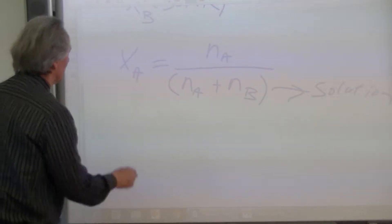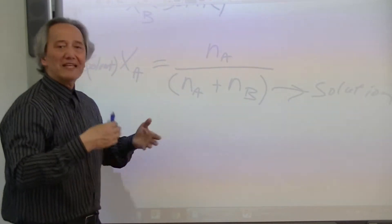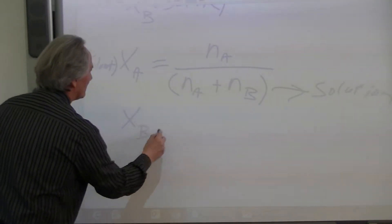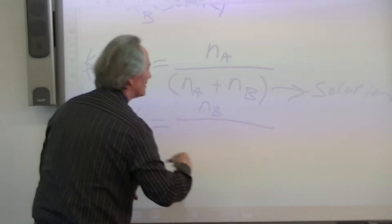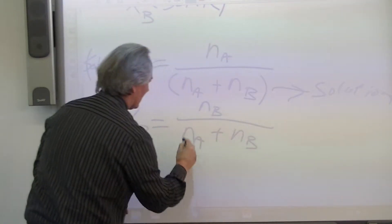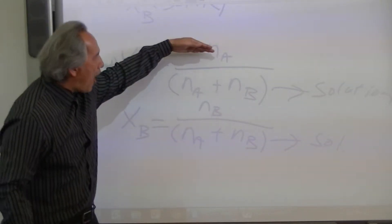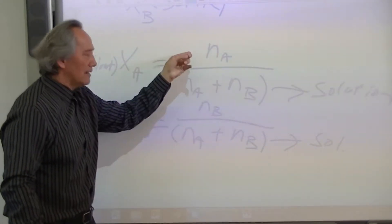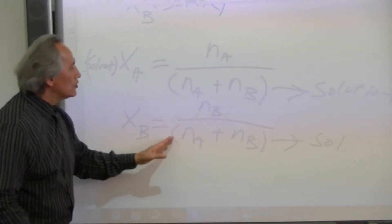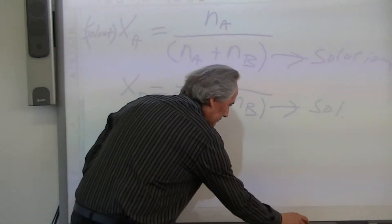Let's also express this in terms of the solute. The mole fraction of the solute is symbolized by X sub B, which equals moles of B divided by the whole, which is N sub A plus N sub B — the entire solution. Note the relationship: a part of the solution to a whole. Having said that, let's go ahead and look at our first problem in terms of mole fraction.